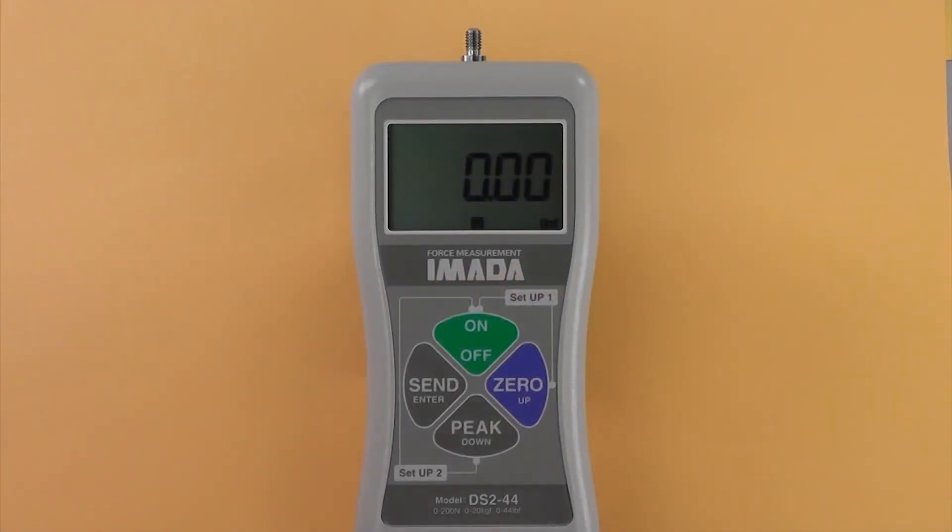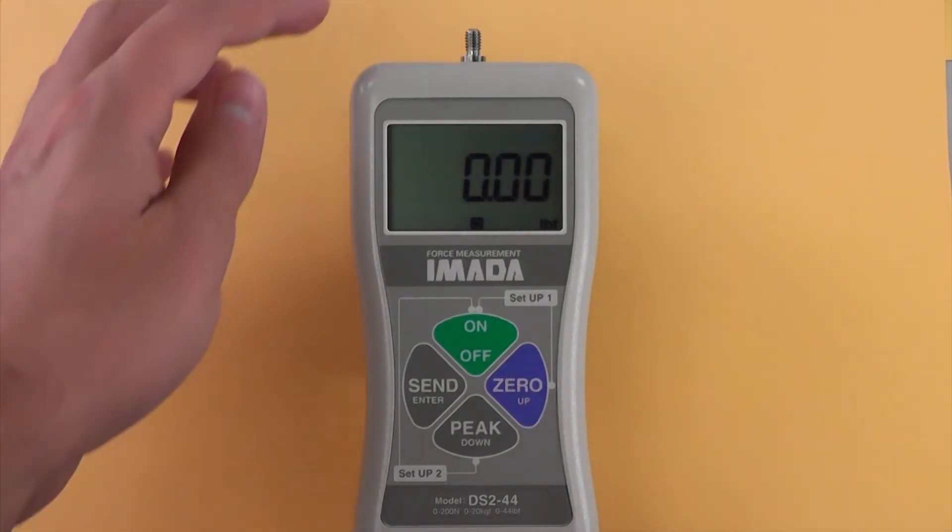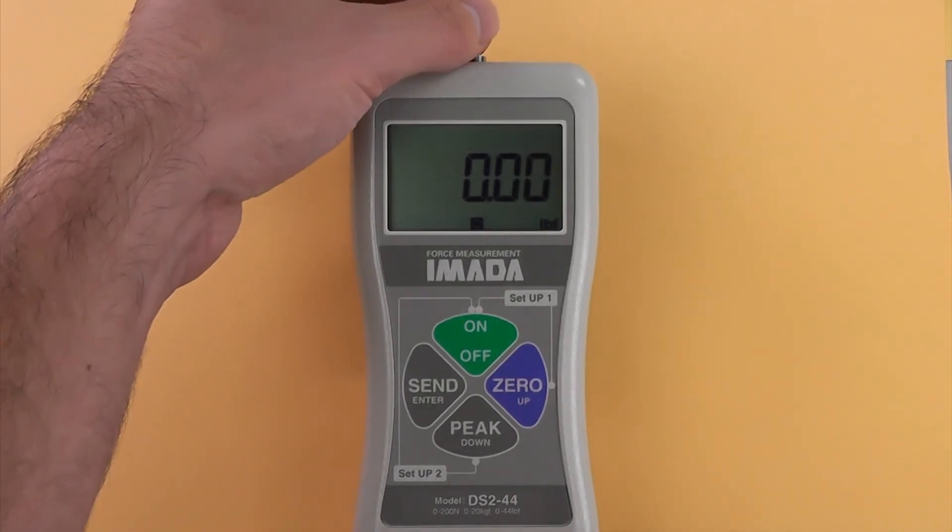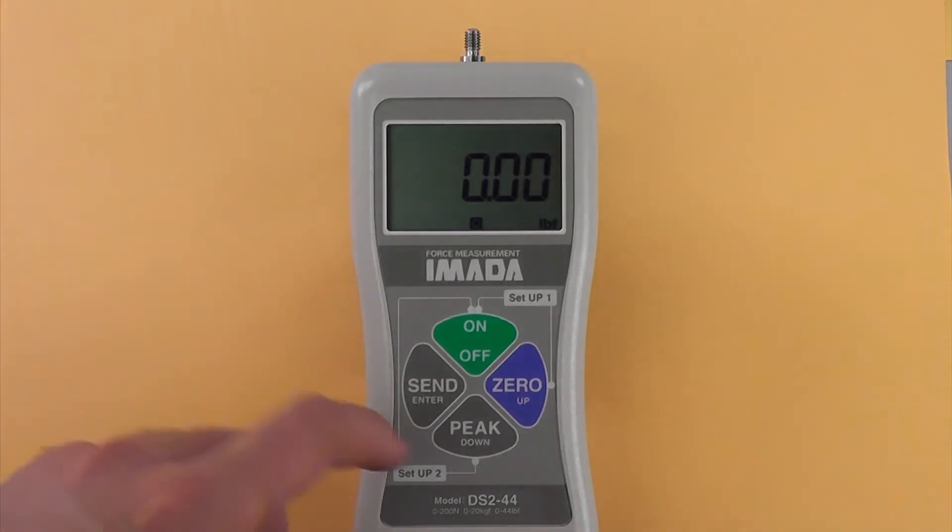Selecting peak or real-time measuring mode: Press ON to turn on the gauge and enter real-time mode. For peak measurement, press PEAK.